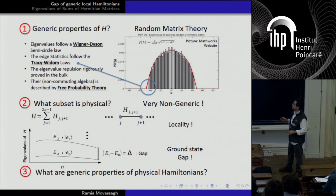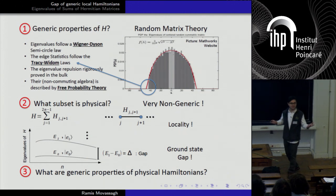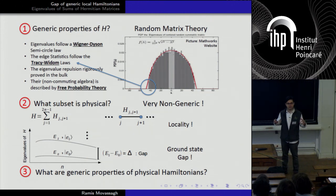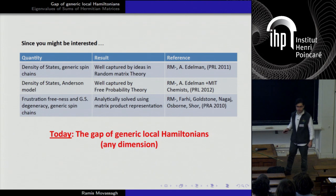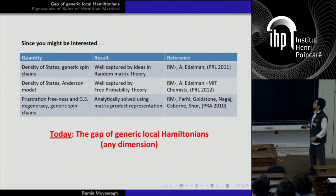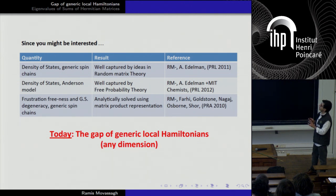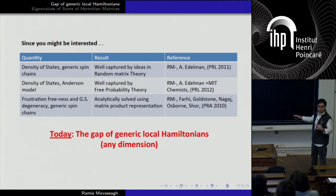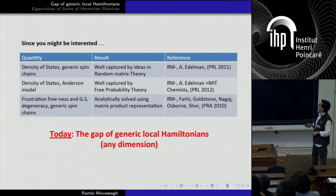So you can ask: given these constraints, what are the generic properties? Suppose I do confine to this physical subset, what can I say generically? There's a lot you can say. For example, the density of states of generic spin chains — we could obtain them from free probability and standard probability theory. And connected to an open problem, we have an understanding of the frustration-freeness, ground state degeneracy of generic spin chains. But today I'm going to talk about the gap.